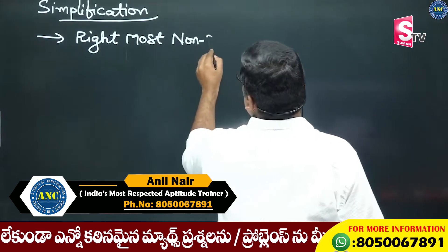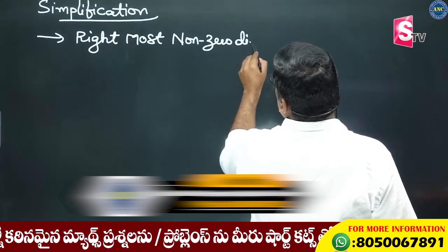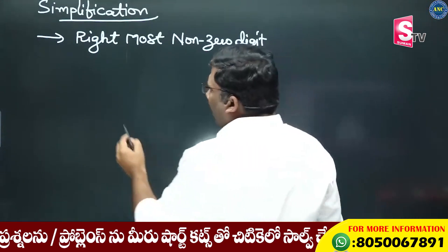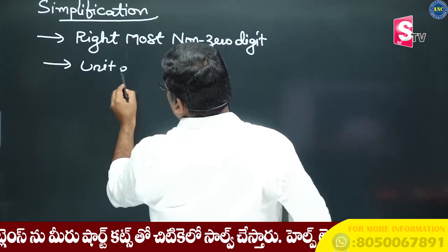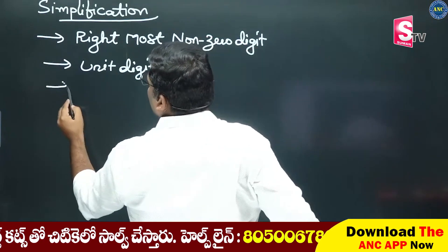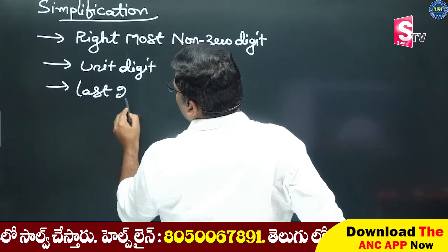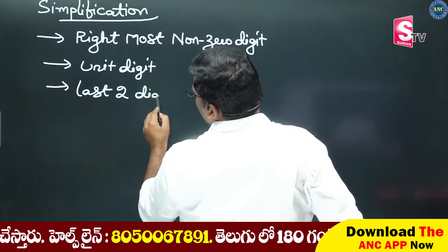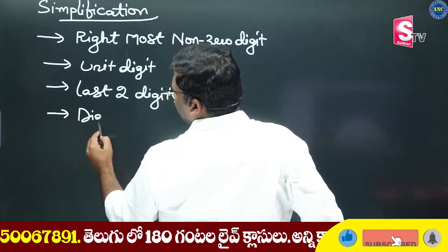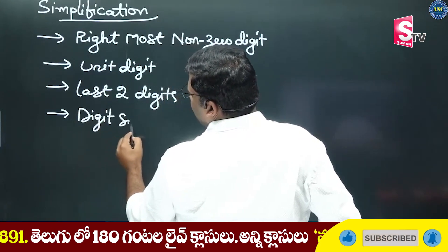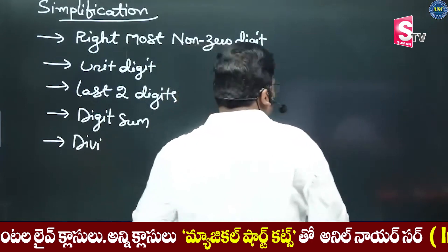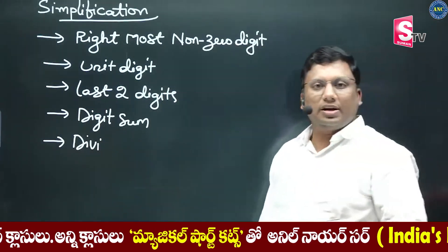How easy it is — you choose the right-most non-zero digit. This step is the right-most non-zero digit. Unit-digit logic. Last two digits logic. Digit-sum logic. Divisibility rule logic.